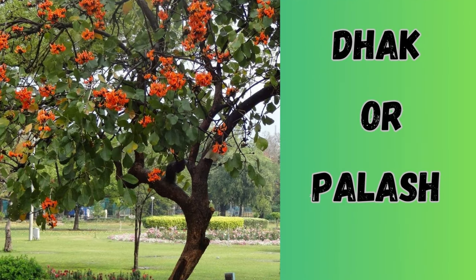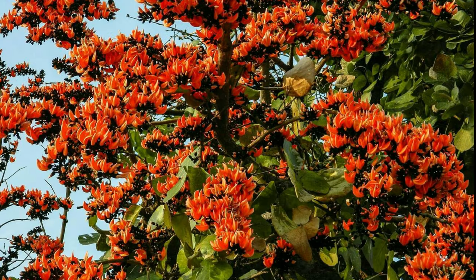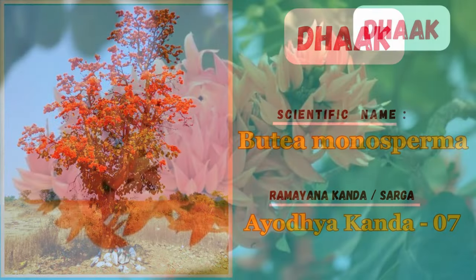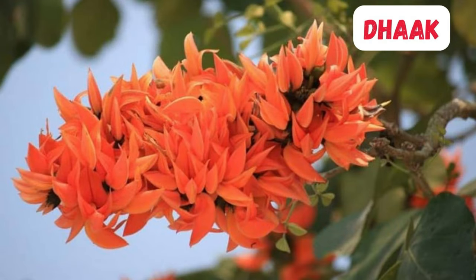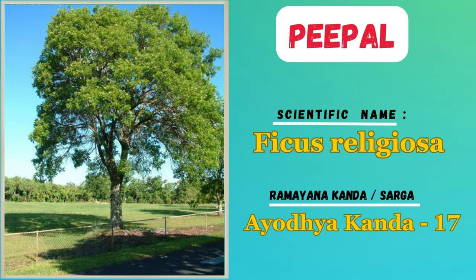Dhak, or Palash — Dhak is known for its bright, colorful orange and red flowers and is often associated with festivals and celebrations. The presence of Dhak in the Ramayana signifies festive and joyous occasions in the epic. Common names include Flame of the Forest, Dhak, Palash, and Bastard Teak. Revered as sacred by Hindus, it is also cultivated as an ornamental tree for its stunning, vivid blooms.